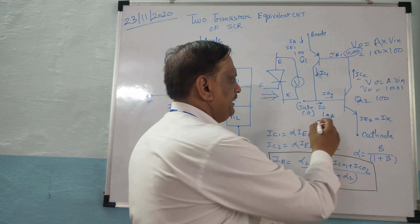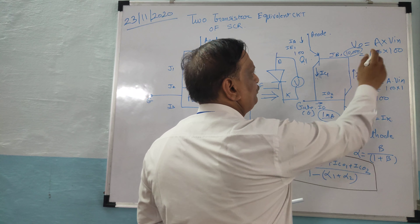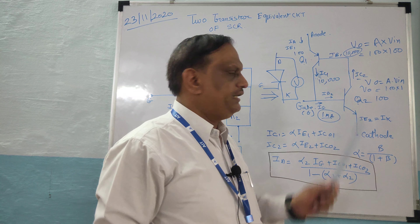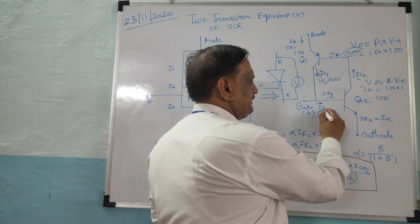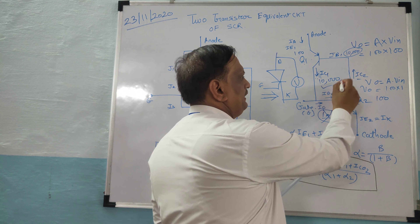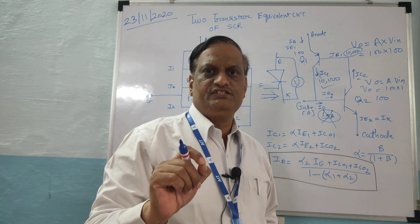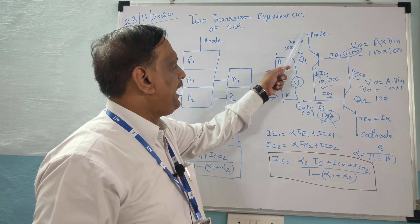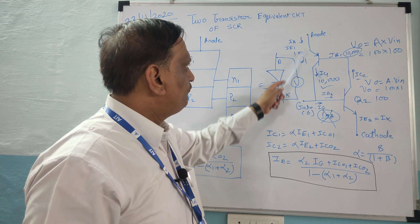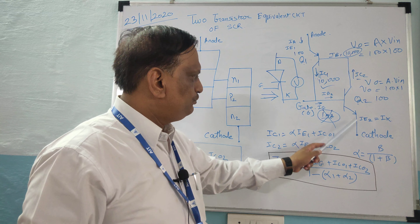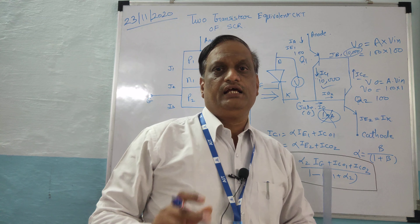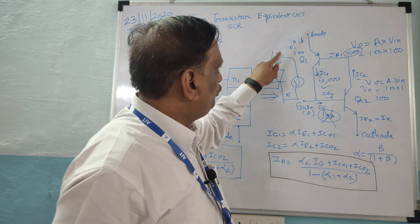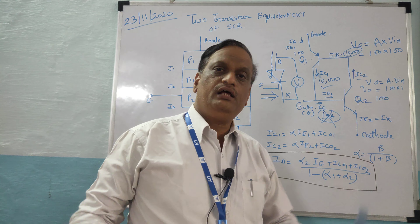The gate loses control because we supplied only 1 milliampere of gate current, but the resulting collector current IC2 is 10,000 milliampere. Since 1 milliampere is negligible compared to 10,000 milliampere, even if you remove IG completely, the current will continue to flow in the circuit. This is the significance of the current set up earlier in the device, which causes a large current to flow from anode to cathode — confirming that the SCR is a unidirectional device.